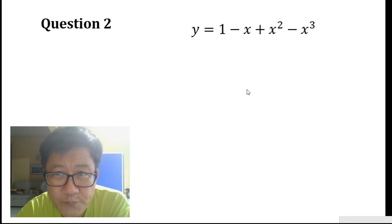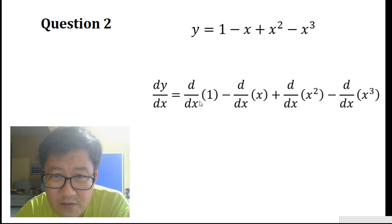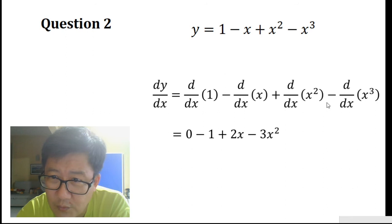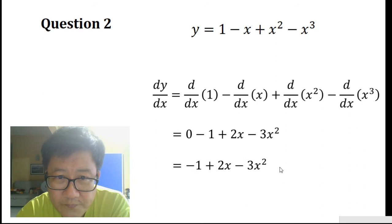Let's go on to question 2. y is the expression 1 minus x plus x squared minus x cubed. When we differentiate y, we differentiate each of the terms independently. When we differentiate 1, we get 0. When we differentiate x, we get 1 — the minus comes from there. When we differentiate x squared, we get 2x. When we differentiate x cubed, we get 3x squared — the minus comes from there. Tidying this up, we get dy/dx equals minus 1 plus 2x minus 3x squared.